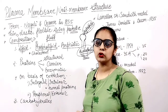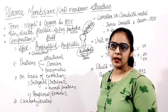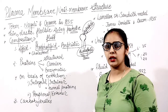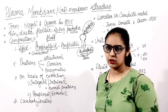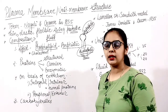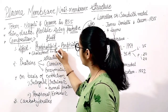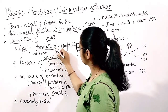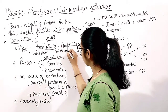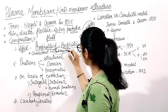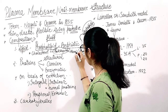In eukaryotes, the lipids also include some special receptors called cholesterol. Cholesterol helps in transportation. However, cholesterol is absent in prokaryotes and is present only in eukaryotes.